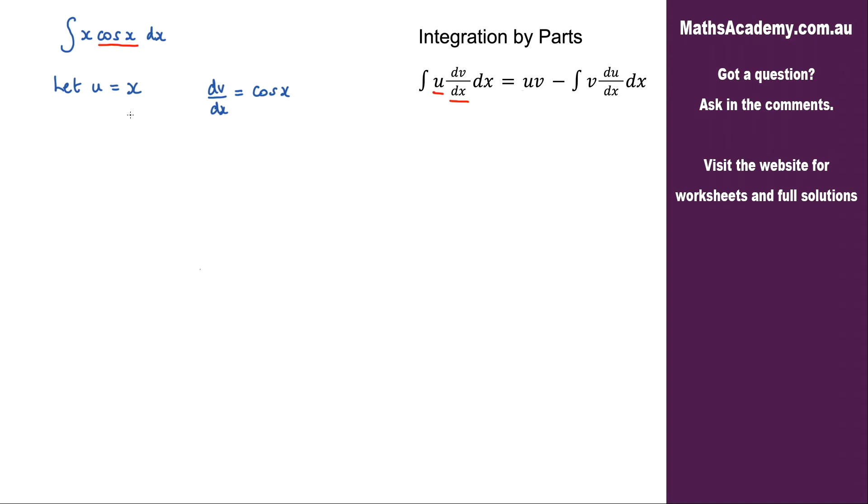Now with the u equals x I need to differentiate that to get du by dx. That'll just be equal to 1. I need to integrate this to get v and when I integrate cosine x I get sine x.